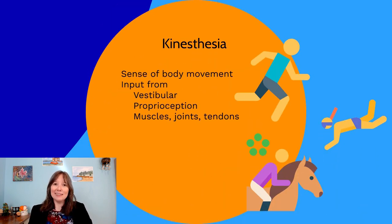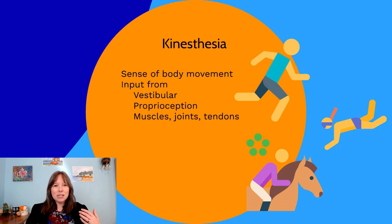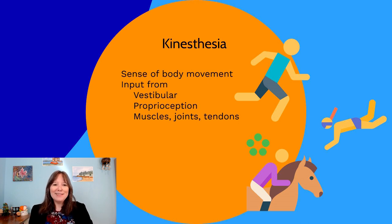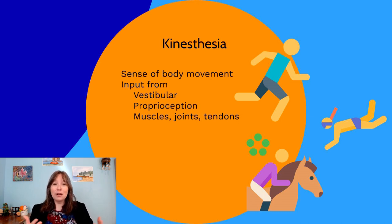Finally, we'll talk about kinesthesia. Kinesthesia gets information from the vestibular and proprioceptive systems, plus additional input from our muscles, joints, and tendons. It's not just about balance or body position, but the sense of our body moving through space — the sensation that when you're walking you're actually walking and not standing still, or when you're swimming you're actually moving through the water. This sense can be tricked: on a moving sidewalk when it stops, or on a train when you think your train has started but it's actually the train beside you. Kinesthesia is a separate sense from vestibular, proprioceptive, and auditory — and all four get information from your ear.